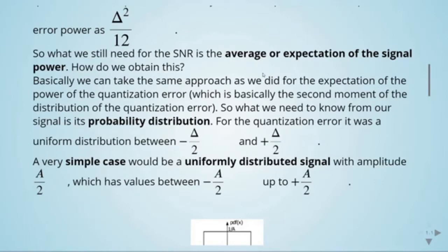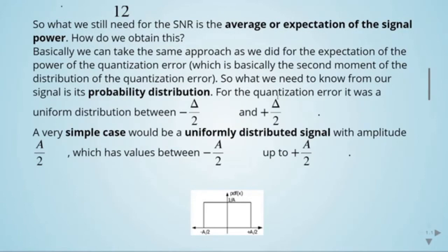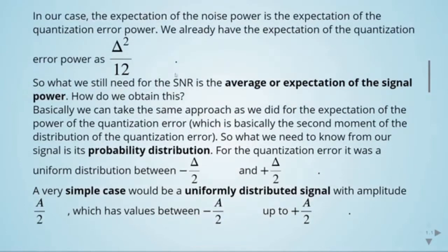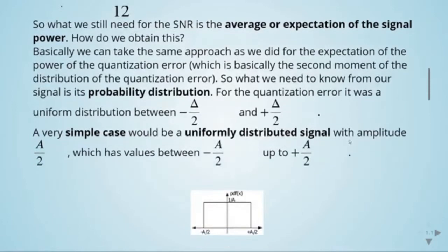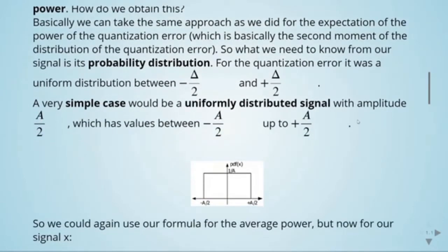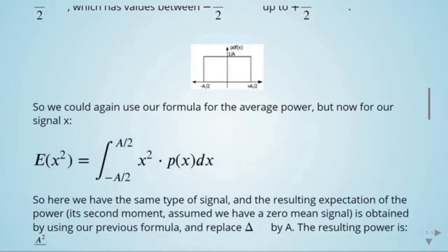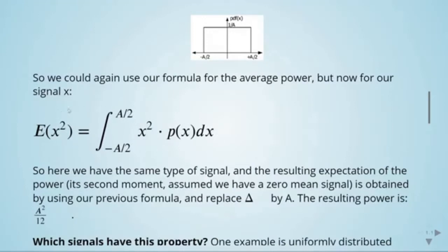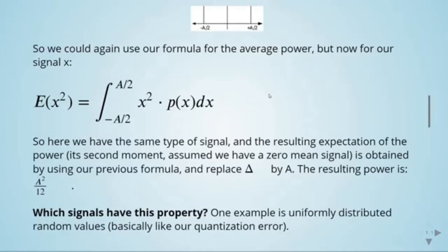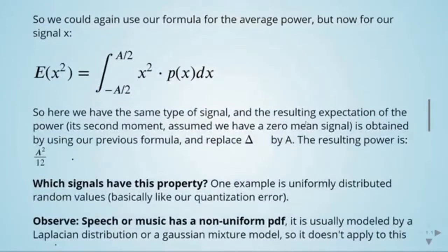A simple case is to calculate the expectation of the signal power for a uniformly distributed signal with amplitude a/2, having values between minus a/2 up to plus a/2. This is exactly the same case as we calculated for the quantization error — we simply replace the step size by a. The probability distribution is 1/a, and using the formula for average power we find that the expected power for a uniformly distributed signal with amplitude a/2 is a² divided by 12.